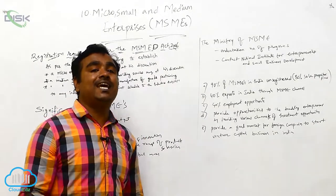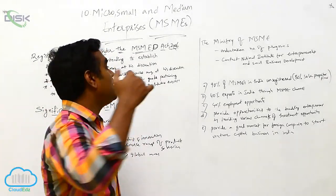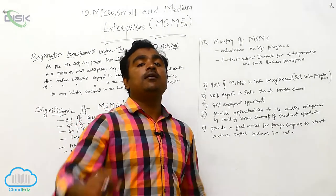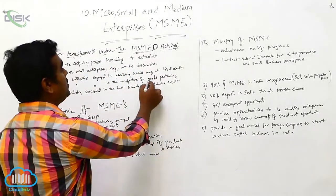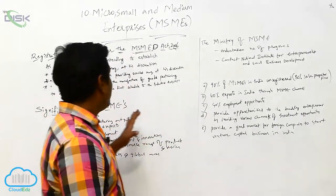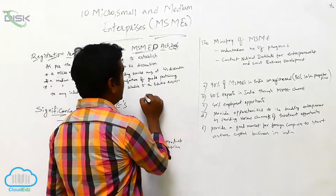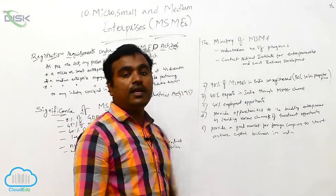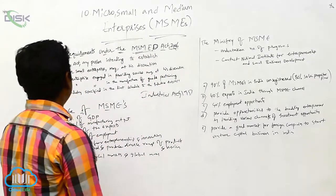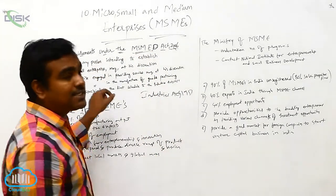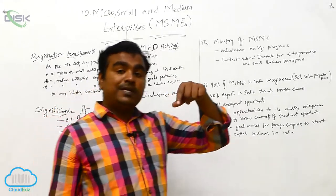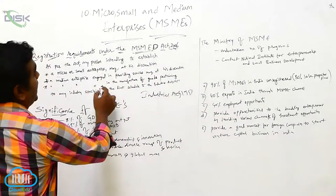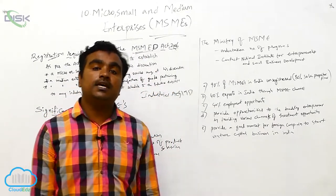A medium enterprise engaged in manufacturing of goods pertaining to any industry specified in the First Schedule to the Industries Development and Regulation Act 1951 is classified according to that act. So a medium enterprise engaged in manufacturing of goods and services is classified accordingly.